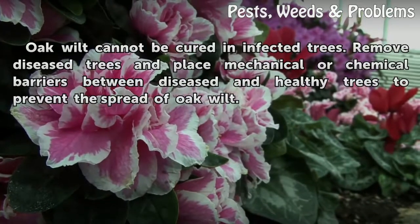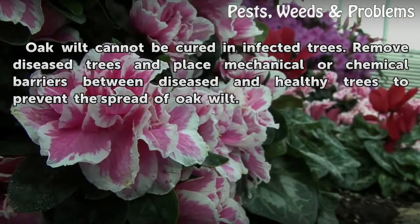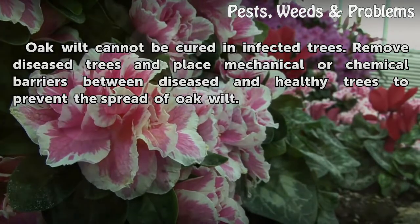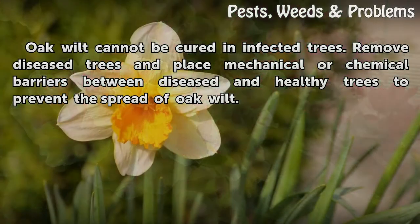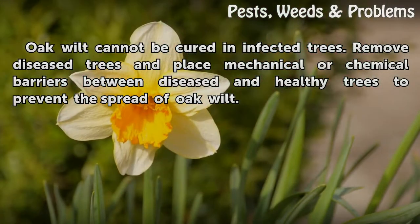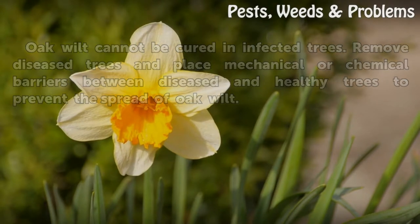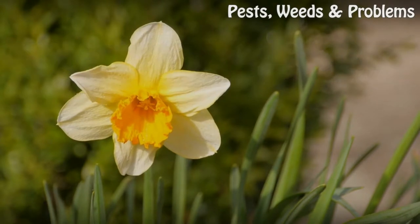Oak wilt cannot be cured in infected trees. Remove diseased trees and place mechanical or chemical barriers between diseased and healthy trees to prevent the spread of oak wilt.